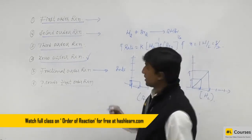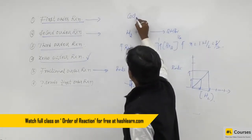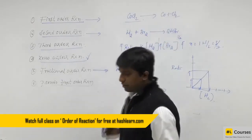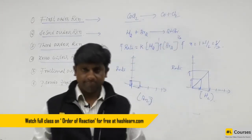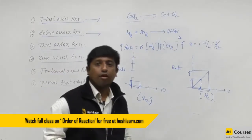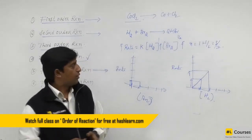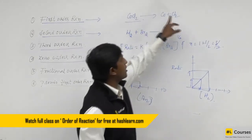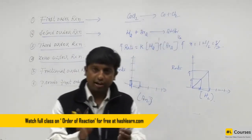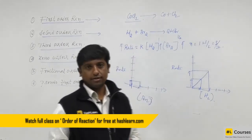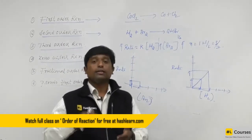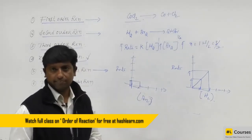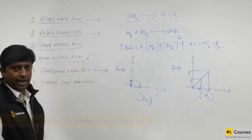One more example: the decomposition of carbonyl chloride to give carbon monoxide and chlorine. Carbonyl chloride is also called phosgene — it is a poisonous gas formed during the oxidation of chloroform. The decomposition of carbonyl chloride is also an example of a fractional order reaction. A fractional order reaction is a reaction in which the order has a fractional value.